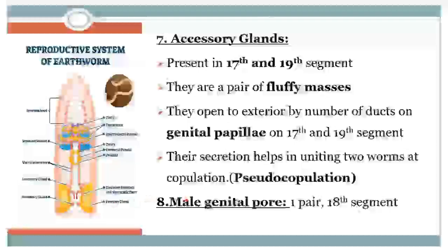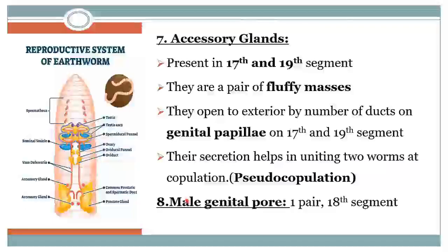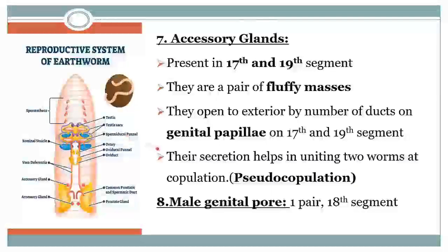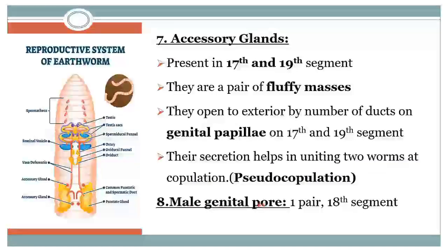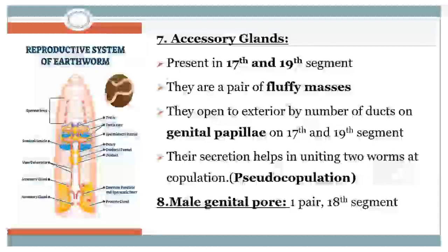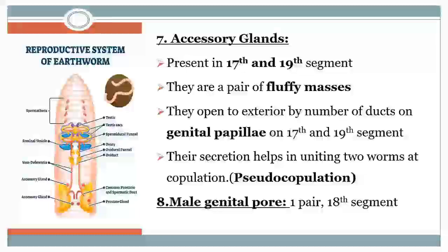The last part of the male reproductive system of the earthworm is the male genital pore. One pair of the male genital pore is present on the 18th segment of the earthworm.